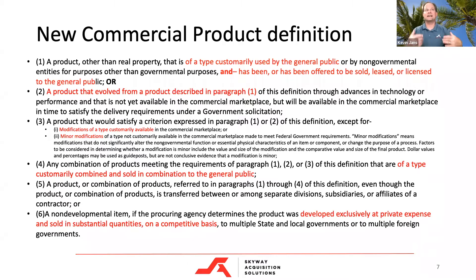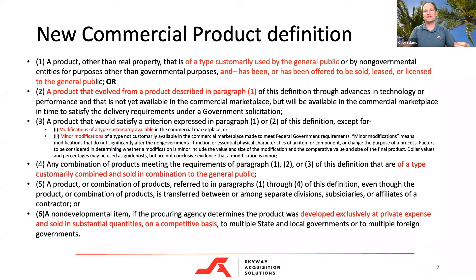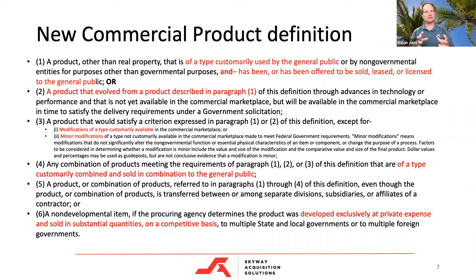If it's a minor modification — even a color we don't typically sell — and the government wants to buy it in that color, it's still a commercial item. The next paragraph says if it's a minor modification that doesn't significantly alter the non-governmental function — it doesn't change it from being a vehicle into something else, doesn't change a software product into an operating system — it's not fundamentally changing what it does. It's still a commercial item.